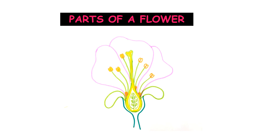Why do plants have flowers? Plants have had flowers from very old times — almost as old as 140 million years ago, during the Jurassic period. That's because flowers play an important role in the sexual reproduction cycle of plants. So flowers are the reproductive structures of the plant.